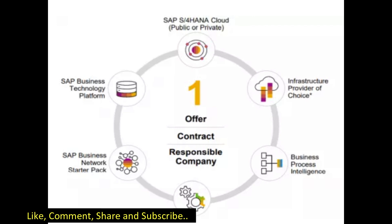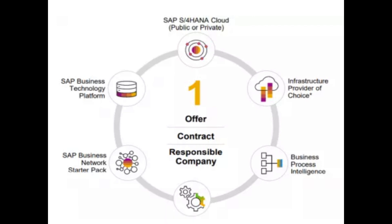The next component is SAP Industry Cloud, which is a collection of industry-specific solutions tailored to the needs of specific industries such as healthcare, retail, and manufacturing. Next is SAP Intelligent Robotic Process Automation, a tool which helps businesses automate repetitive tasks, freeing up employees to focus on more strategic activities. Another component is the SAP Digital Supply Chain, a suite of tools that helps businesses optimize their supply chain operations including inventory management, logistics, and procurement.